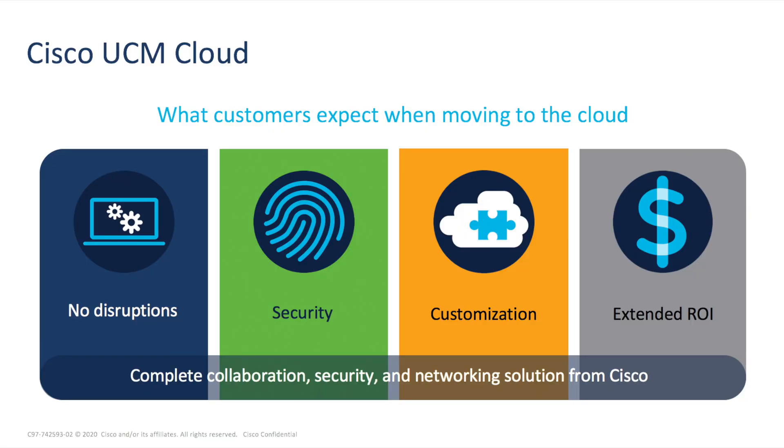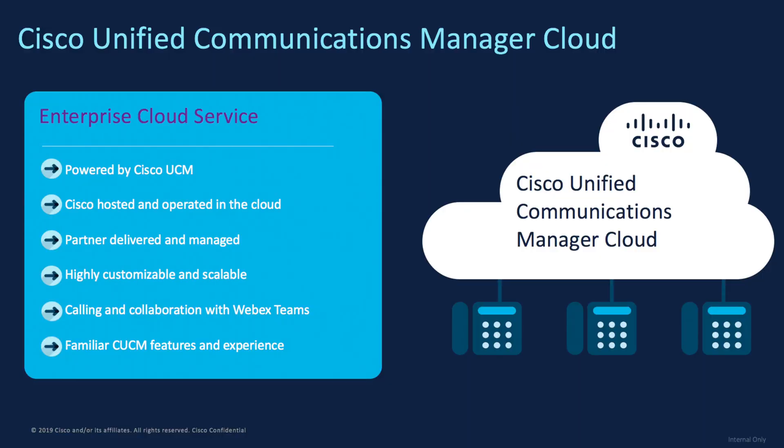For companies who have Call Manager deployed in their offices, branch offices, and headquarters, and they have legacy handsets deployed — for example, 7900 series — and they're not yet ready to replace them, and they've also built business processes and integrations using the Call Manager APIs, for them we have a solution called UCM Cloud. UCM Cloud is a cloud solution built inside Cisco data centers and it is built upon the Call Manager application.